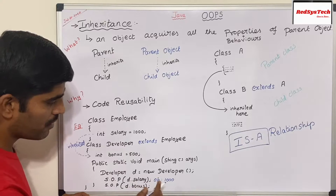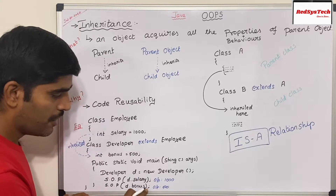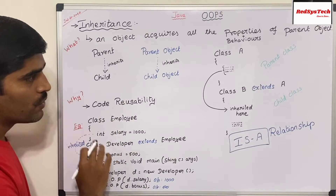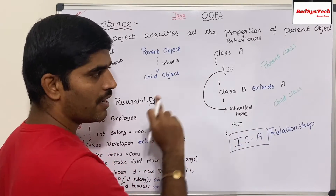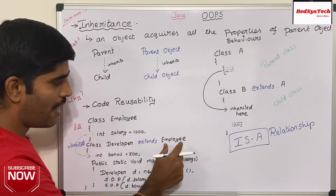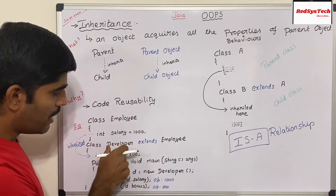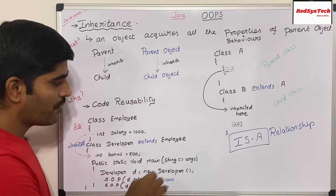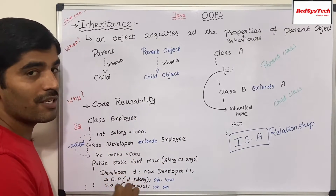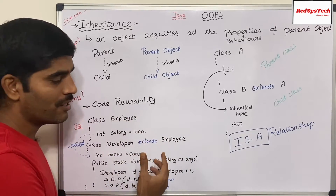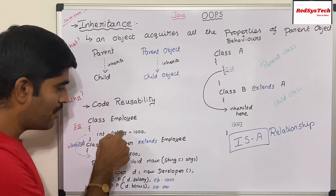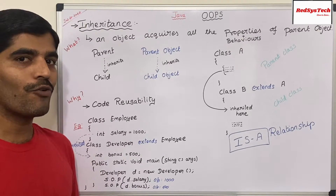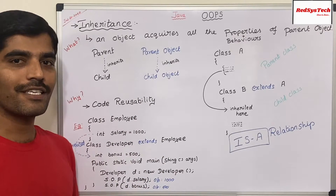Similarly, D.bonus output is 500. So this 500 is coming from the Developer class and this 1000 is coming from the parent Employee class. We call the Employee class the parent class and the Developer class the child class. Developer is of type Employee — a developer should be an employee of a company. The child object inherits all the properties and behavior from the parent object. This is called inheritance. Let's dive into the coding to see in and out of how inheritance works and the multiple types of inheritance.